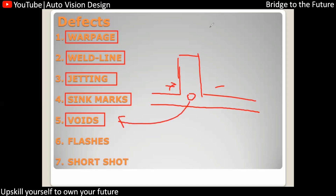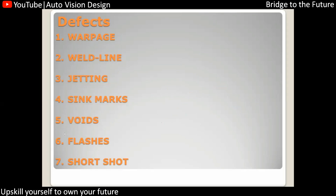Flash is when material leaks from the parting line — the joining point of the core and cavity of the mold. The leakage of material at that joint is known as flash.